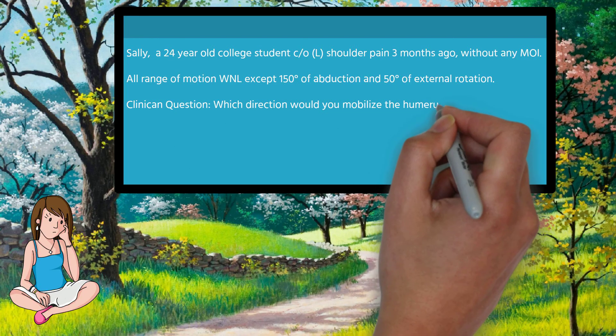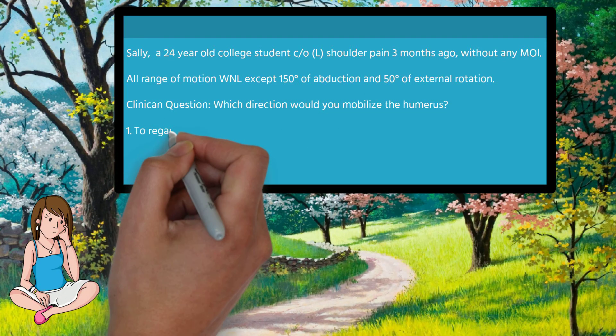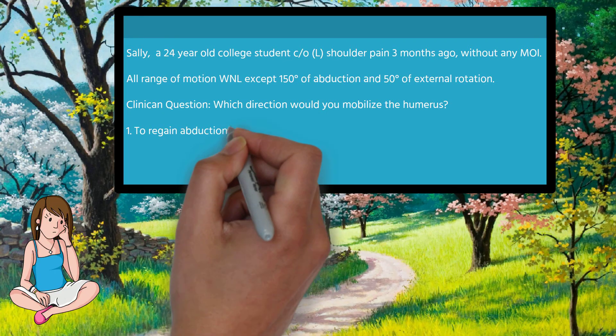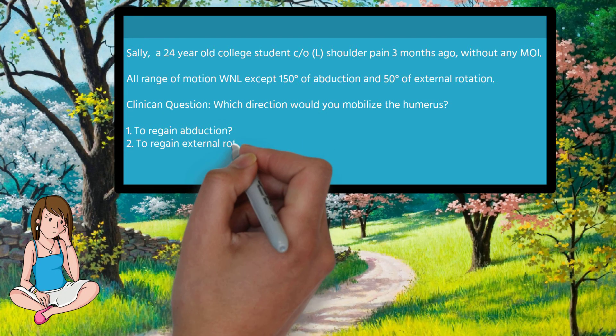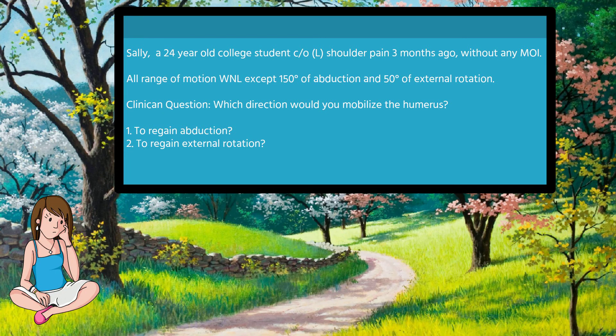Question: which direction would you mobilize the humerus — one, if you wanted to regain abduction range of motion, and two, if you wanted to regain external rotation range of motion?